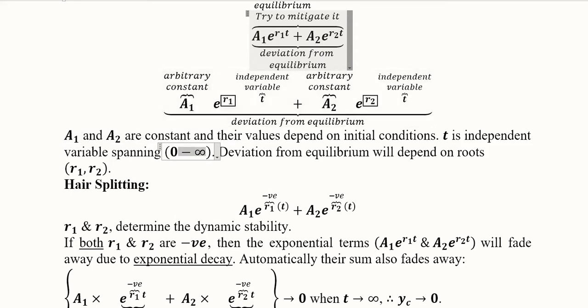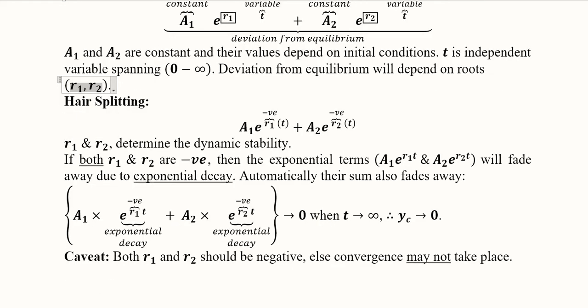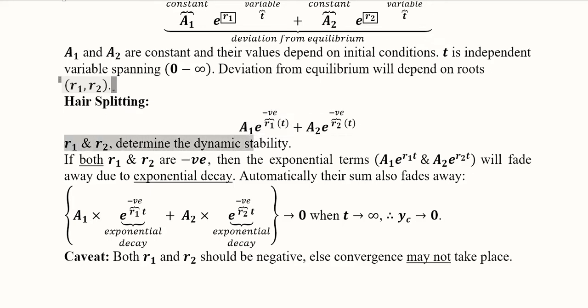t is the independent variable spanning from 0 to infinity — time starts now and can go to an undefined period in the future. The things we can calculate are r1 and r2. To achieve exponential decay, both roots r1 and r2 should be negative, so that both terms are decaying over time. r1 and r2 determine the dynamic stability.